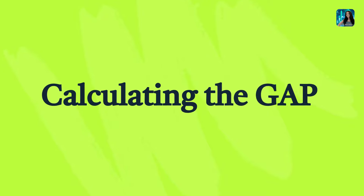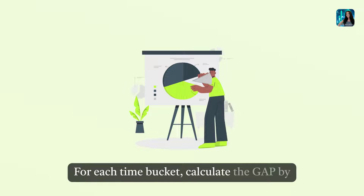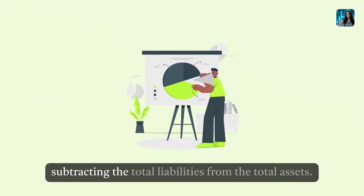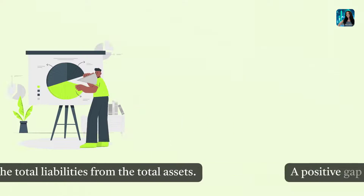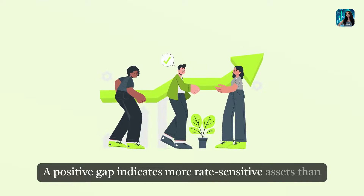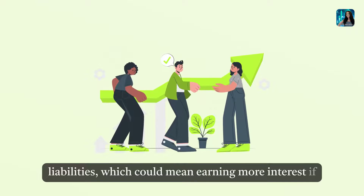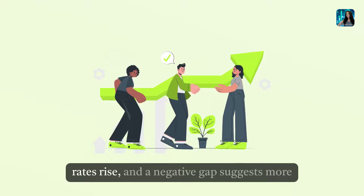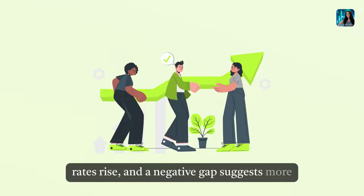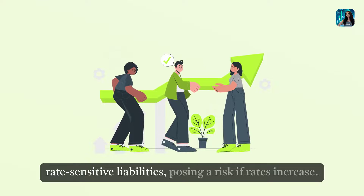Calculating the Gap. For each time bucket, calculate the gap by subtracting the total liabilities from the total assets. A positive gap indicates more rate-sensitive assets than liabilities, which could mean earning more interest if rates rise, and a negative gap suggests more rate-sensitive liabilities, posing a risk if rates increase.